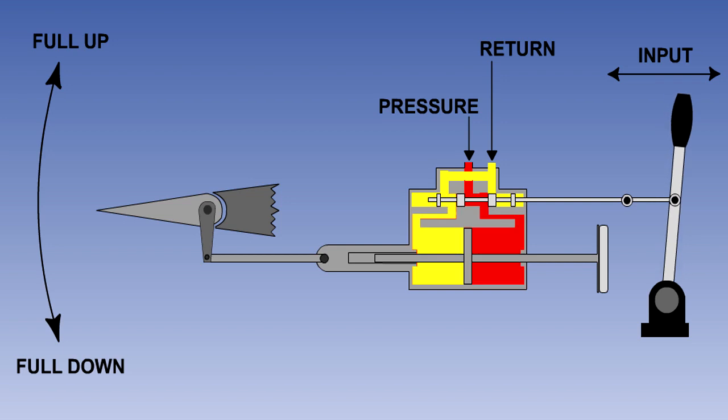In our example here, the pilot pushes the control column forward. When the column is pushed forward, the servo valve is moved over to the right by the control linkage. This action opens the right-hand port of the actuator to hydraulic pressure, while opening the left-hand port to return.